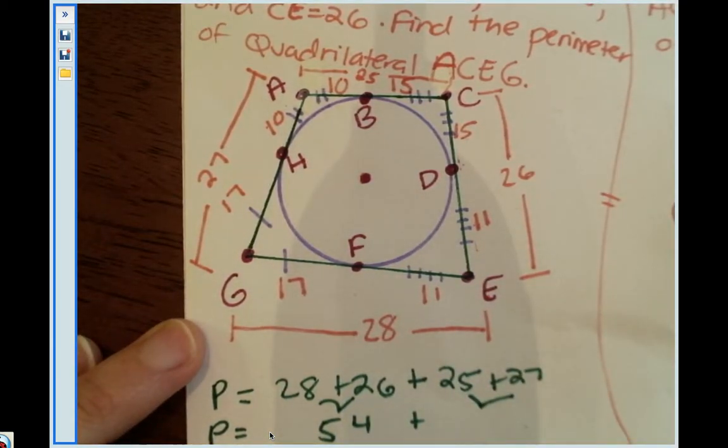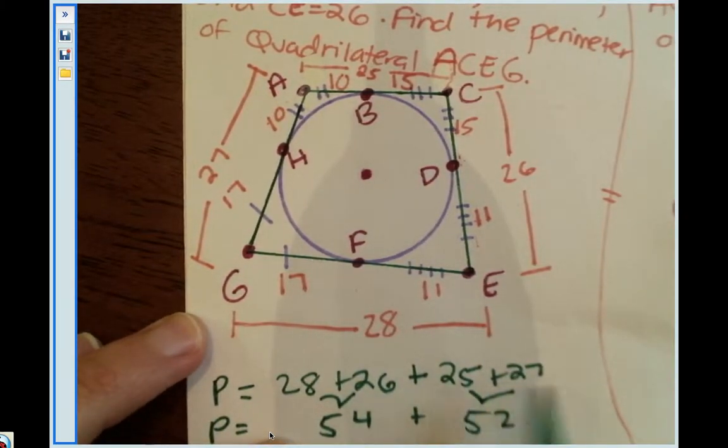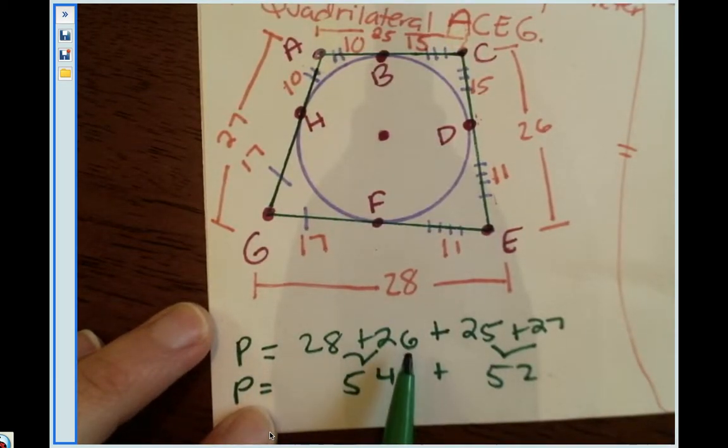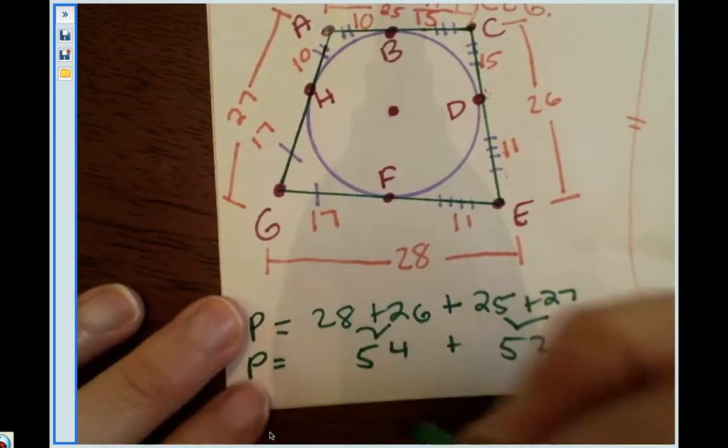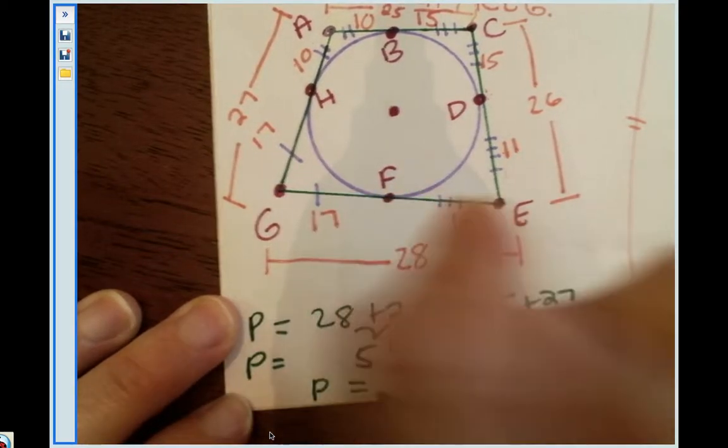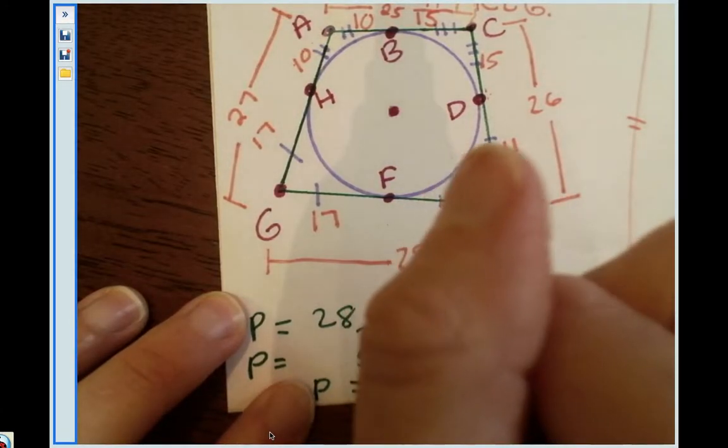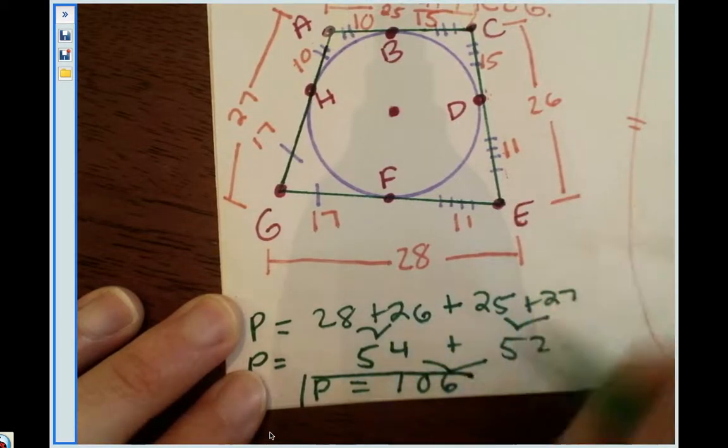So 28 and 26 will give me 54. Plus 25 and 27, that will give me 47 plus 5 is 52. Let me double check that. Yes. And lastly let's add these two together, so perimeter equals 54 and 52 will give me 106. The perimeter is 106 units, which I don't know my unit, so you can either write 106 or you can just write units.